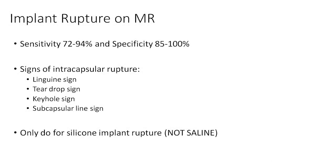Next, we will discuss implant rupture on MRI. This is one of the best modalities for evaluating silicone implant rupture. The sensitivity can be upwards of 94% and with specificity of almost 100%.